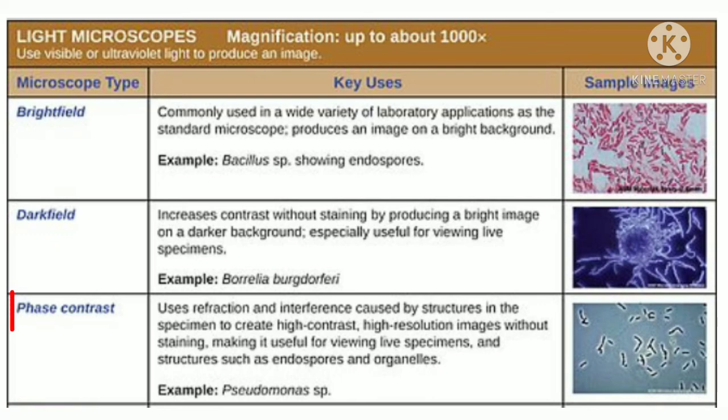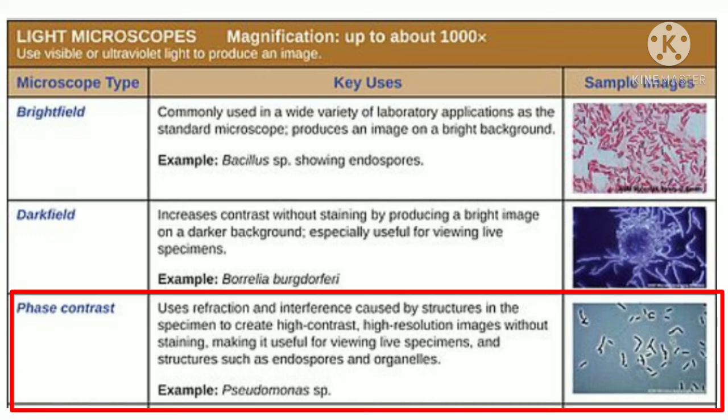The third type is the phase contrast microscope. It uses two sets of rays — one direct and one diffracted — to produce an image, allowing visualization of unstained specimens and cell structures.